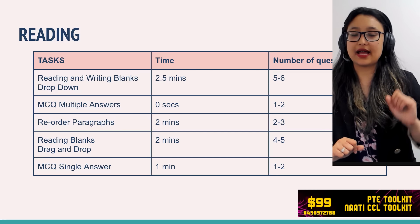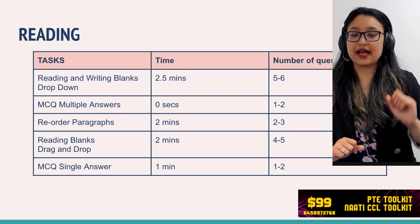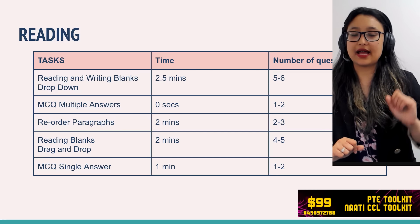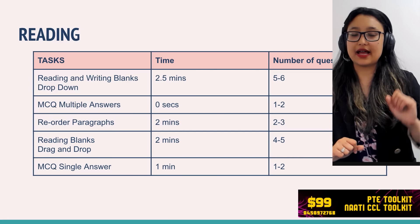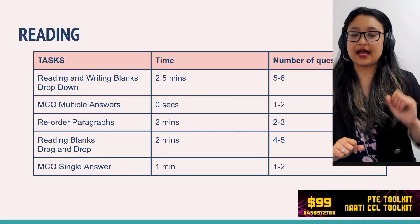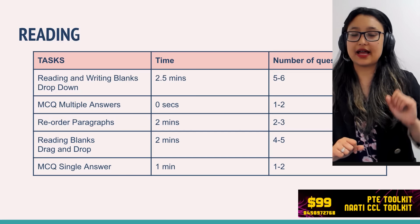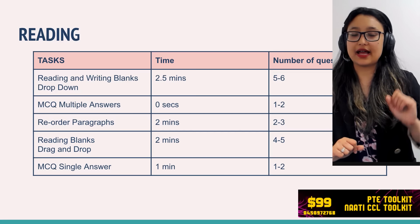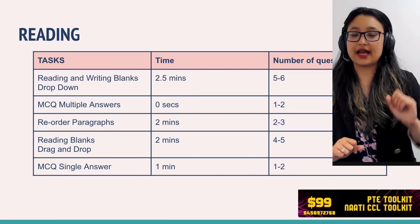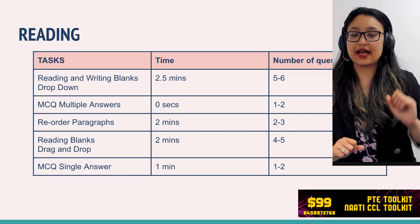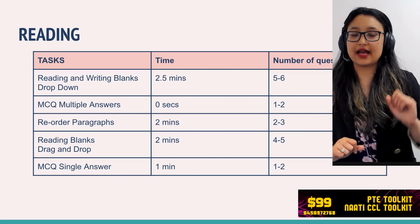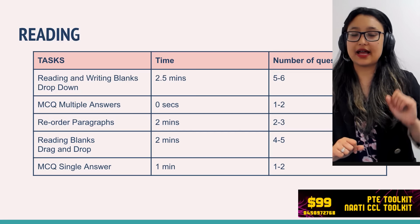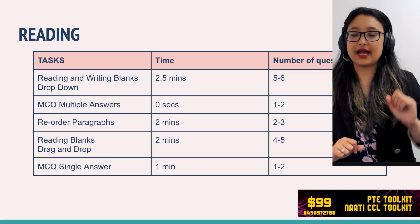After speaking comes writing. The first writing task is summarize written text. You get one to two tasks with 10 minutes each. You receive a passage and must summarize it. Rather than using your own grammar and vocabulary — which can actually lower marks — the recommended method is a copy-paste technique. A detailed video on this method is available separately.